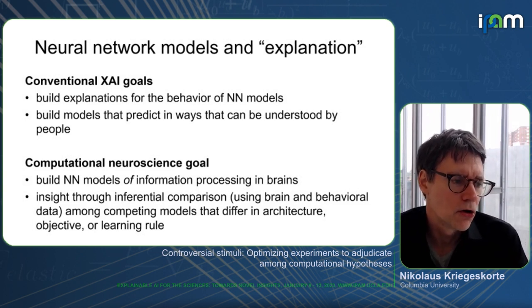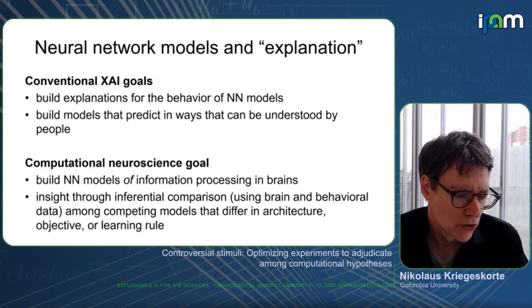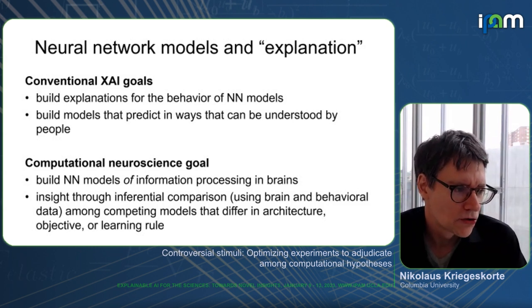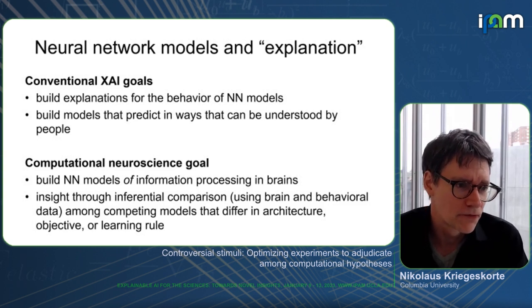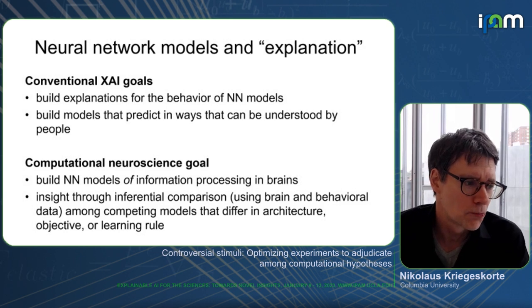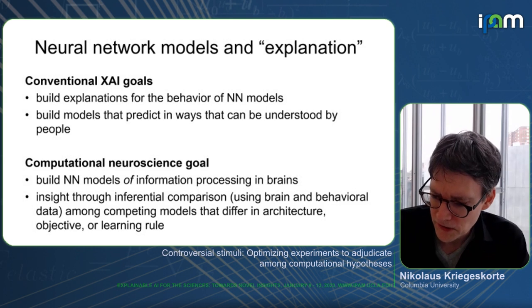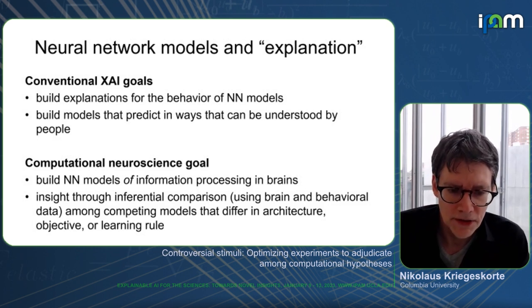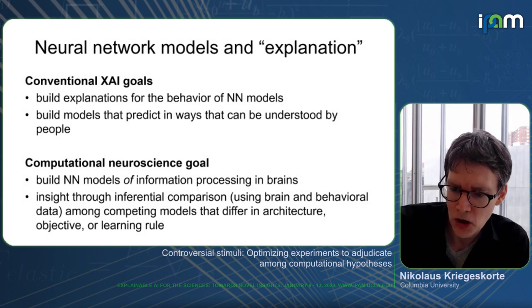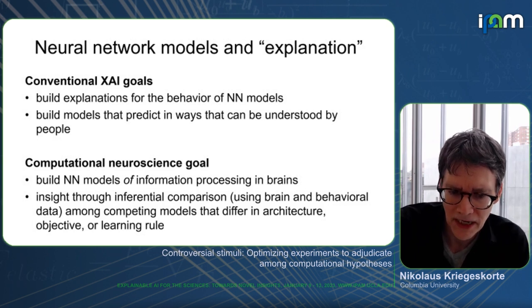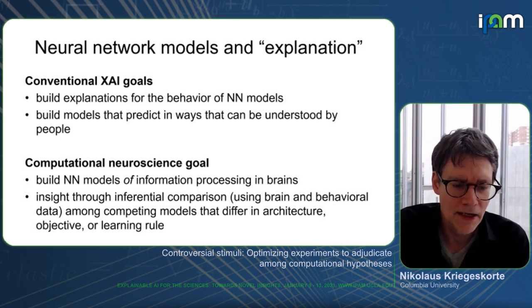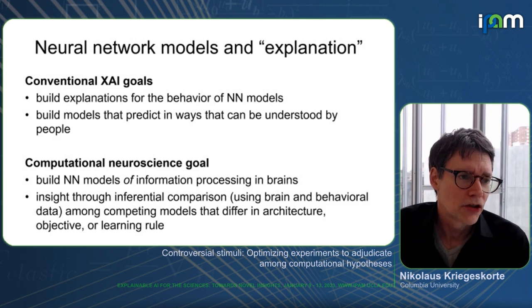It's not so much about building models in a way that makes them easier to understand. We want the models to be connectionist — to have lots of connections like biological brains. In a sense, what might be considered the bug is a feature here. These neural network models are inspired by brains, they're complex like brains, and therefore we think they're potentially good models of how brains process information.